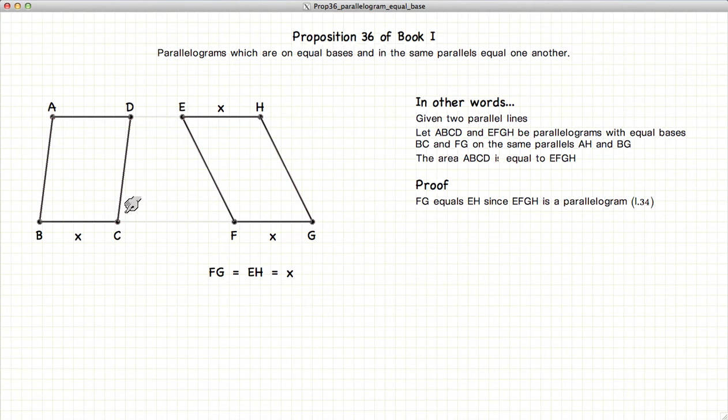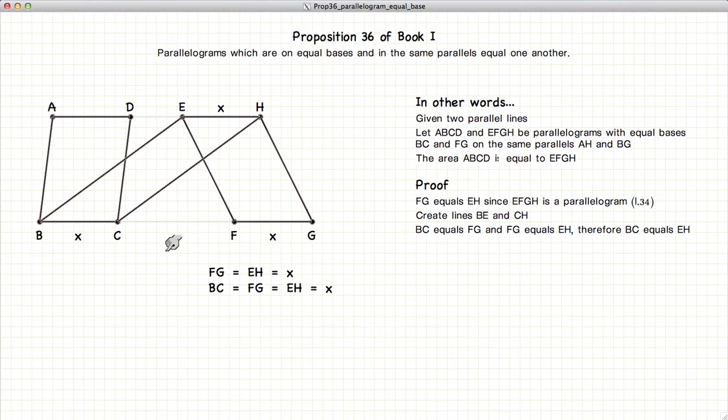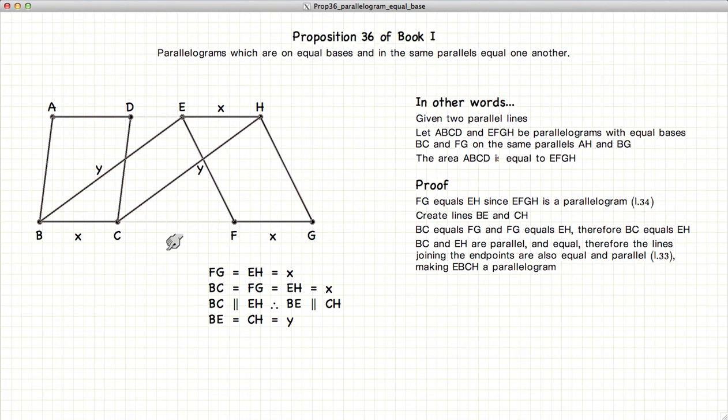So now let's draw the line CH and BE. BC is distance X, EH is also distance X. These two lines are parallel. And we know from Proposition 33 that if we have two parallel lines of equal length and join the ends together, we will construct a parallelogram.